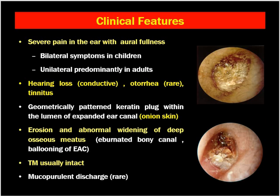On inspection, you can see the mass here. This is the onion skin appearance, and it is expanding the external auditory canal — meaning the bony canal. On removal of the debris, we can see erosion and abnormal widening of the deep external auditory canal — the bony canal — which can be seen as an eburnated bony canal or ballooning of the EAC. The cartilaginous canal is of normal caliber, whereas the bony canal is widened.